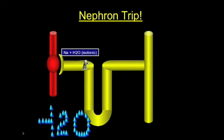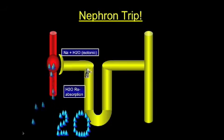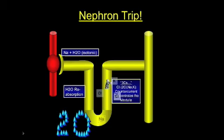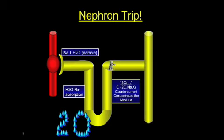Now you get to the loop of Henle, whose main purpose is to concentrate the medulla so that urine can ultimately be concentrated — humans like to concentrate their urine. The descending limb is pure water reabsorption, made possible because the ascending limb, through active transport using ATP, reabsorbs sodium, chloride, and potassium through the 2-chloride sodium-potassium pump. This sets up an osmotic gradient causing water reabsorption in the descending limb — the basic premise behind the countercurrent multiplier system. At the top of the ascending limb, the concentration is roughly around 100 milliosmoles, so a lot of solute gets taken from the filtrate.